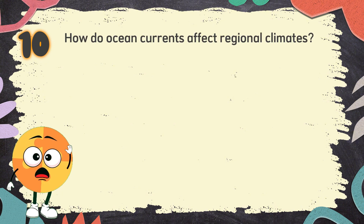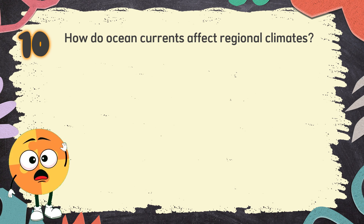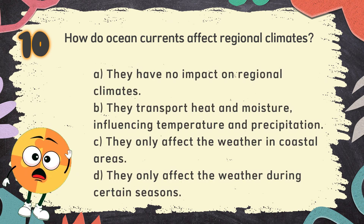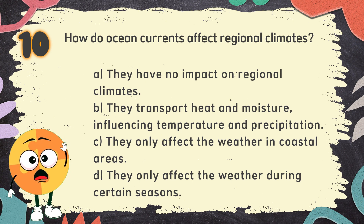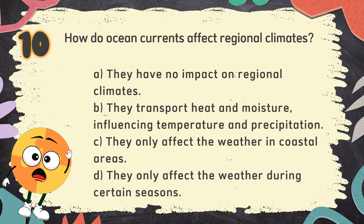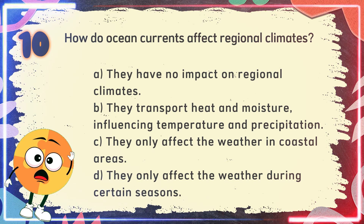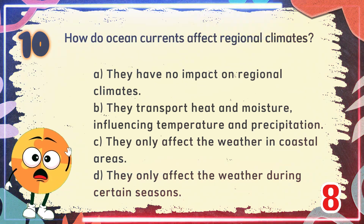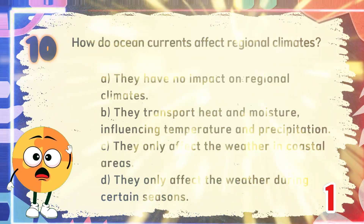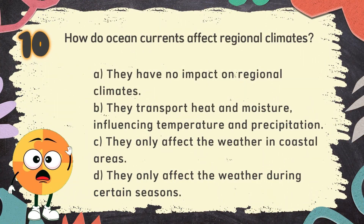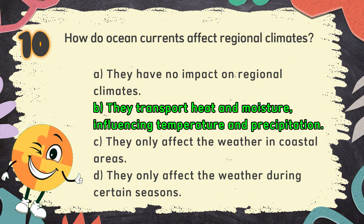Number 10. How do ocean currents affect regional climates? The choices are: A. They have no impact on regional climates. B. They transport heat and moisture, influencing temperature and precipitation. C. They only affect the weather in coastal areas. D. They only affect the weather during certain seasons. The correct answer is B: they transport heat and moisture, influencing temperature and precipitation.